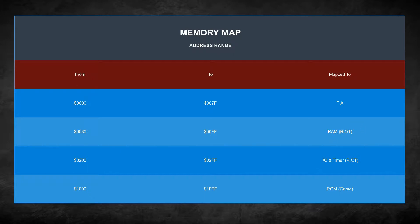If you remember from the previous video, I went over the Atari specifications, and one of them was that we only have 128 bytes of RAM. That's because we can only access from 0x80 to 0xFF — that's where 128 bytes comes from. But in reality our actual address space has 8 kilobytes of memory, because 2 to the power of 13 is 8K, since the 6507 only has 13 address pins. All of that memory is being mapped to different places — the TIA, the RAM, and other sections. That's our RAM. The other part of the RIOT chip is our input/output and timers, also within this range.